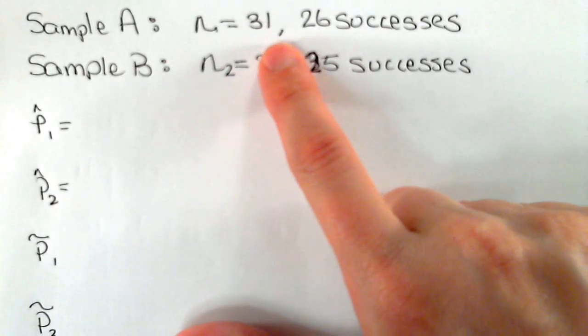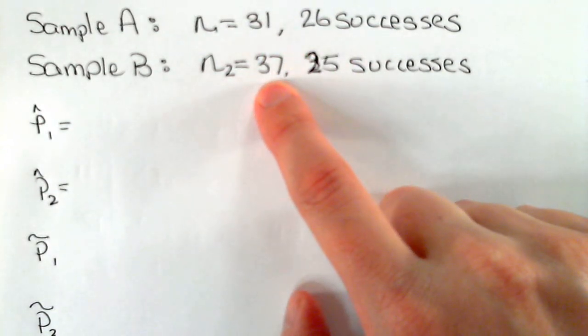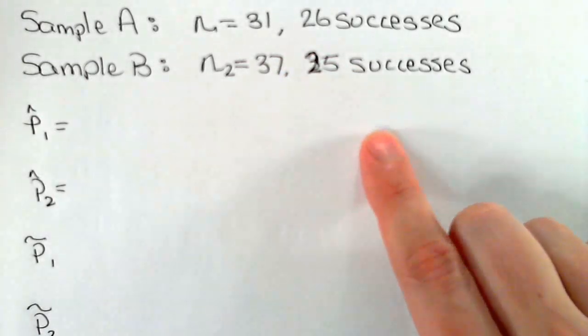We're given that sample A has a sample size of 31 with 26 successes. Sample B has a sample size of 37 with 25 successes.